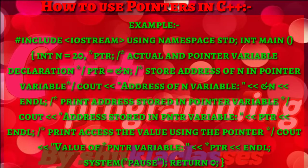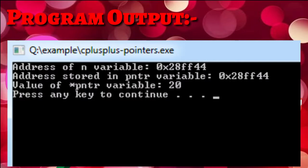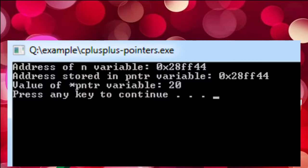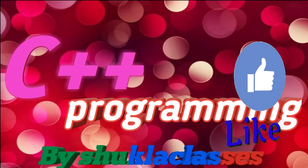The address is stored in the pointer variable. The pointer accesses the value at the pointer variable. The system pauses and returns 0. The output shows the address of variable n as 028FF44, the address stored in the pointer variable is 028FF44, and the pointer variable value is 20.